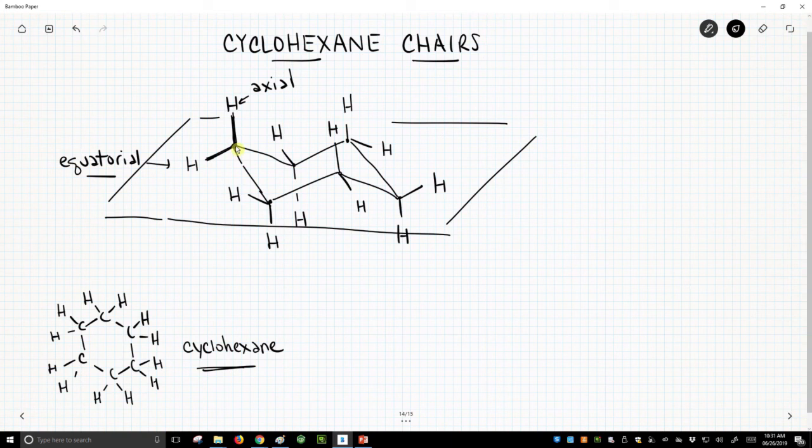Each carbon in the ring also has a group that points roughly up and roughly down. So the axial group definitely is up on the top of that plane. In this case, axial is up. And therefore, equatorial must be down.